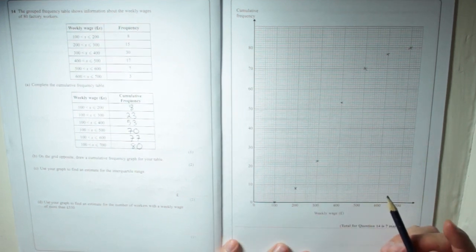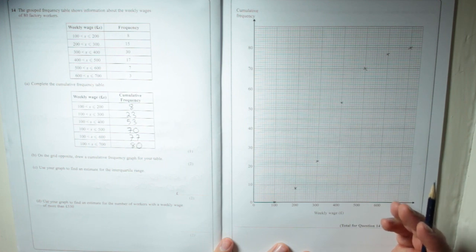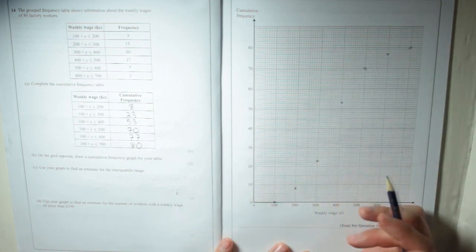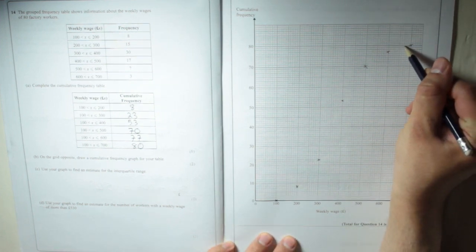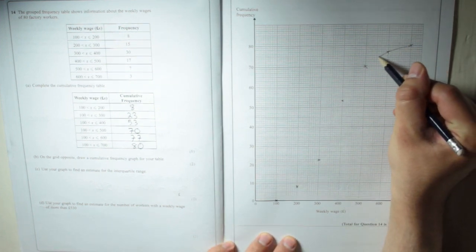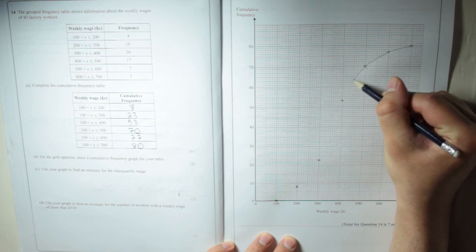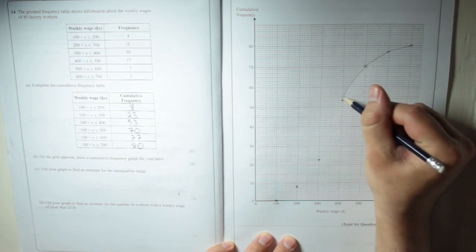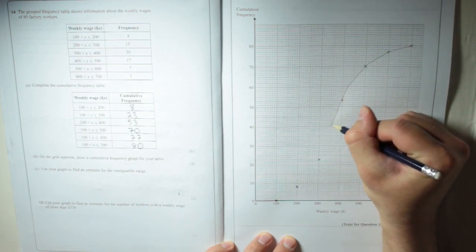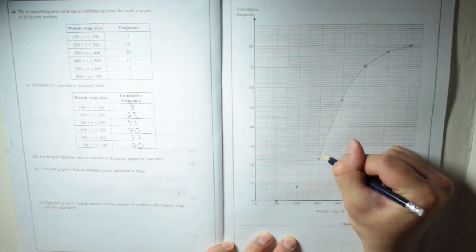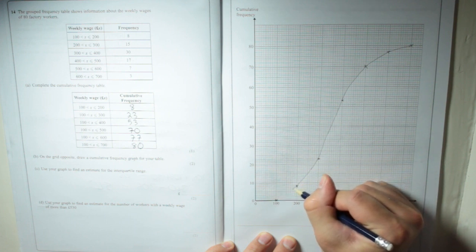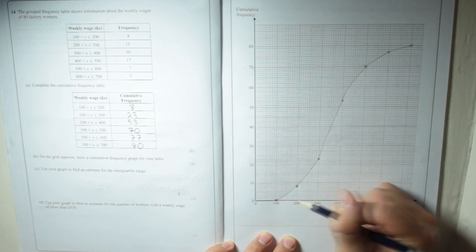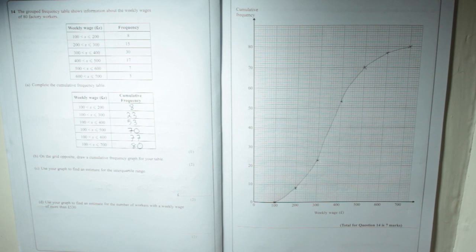Now, when you complete the frequency graph, that's not complete yet, we've only done the coordinates. So what you need to do now is draw a curve as best you can, going through all of the points. Now, don't worry if it's not perfect, because when they ask you questions later on, they ask you to estimate.